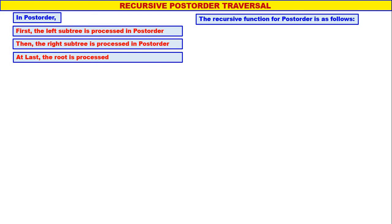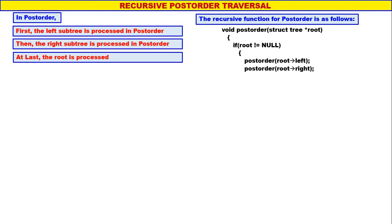The recursive function for post order is as follows. The name of the function is post_order and the parameter is the root of the tree. If root is not equal to null, process the left subtree in post order using recursion, then process the right subtree in post order using recursion. At last, process the root node: printf root information, meaning process the root node.